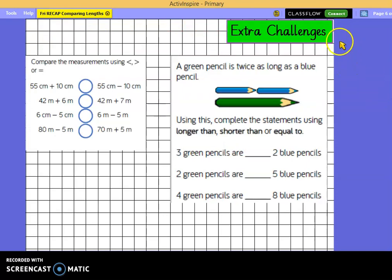When you've done that, here are your additional challenges. Looking back and thinking back to the question we did earlier, compare the measurements using the symbols. Remembering for some of them, we might have to add or take away to find the answers first before we compare. On this one, a green pencil is twice as long as a blue pencil. We're going to use that information to compare the statements using longer than, shorter than, or equal to. Three of these green pencils are longer than, shorter than, or equal to two blue pencils. Then go on to compare the last ones. When you've done that, stick those into your book neatly using the squares and you've completed your challenges.